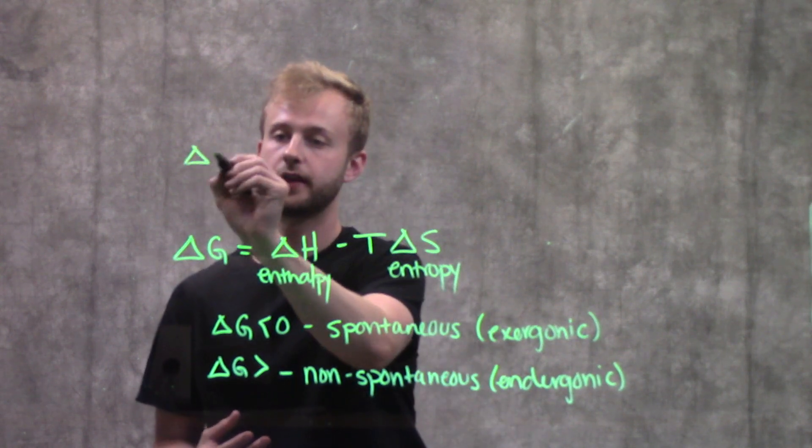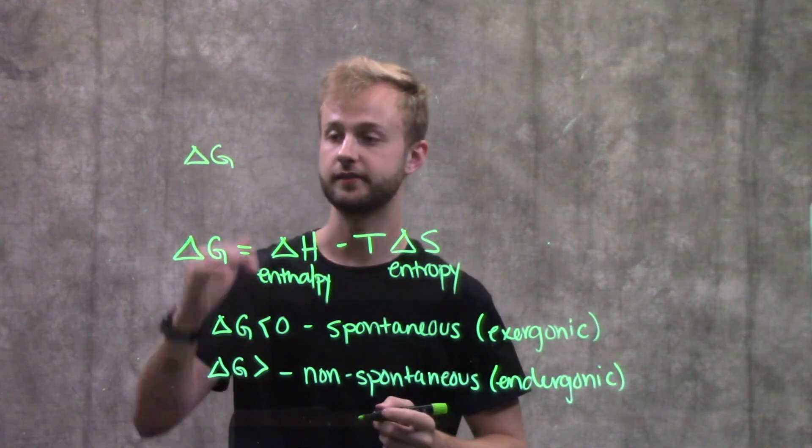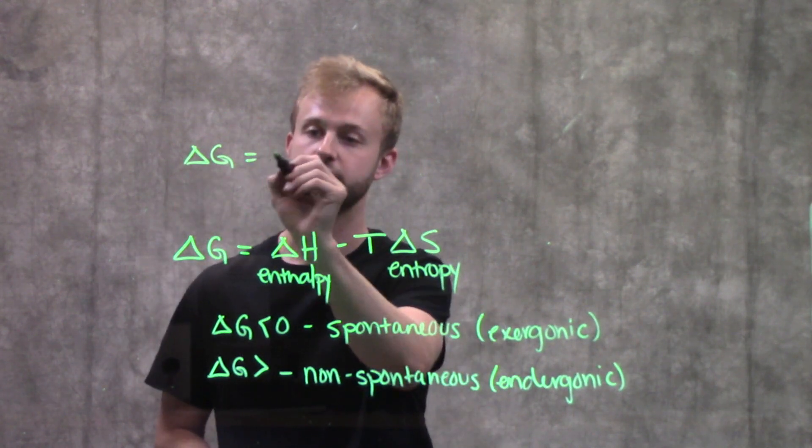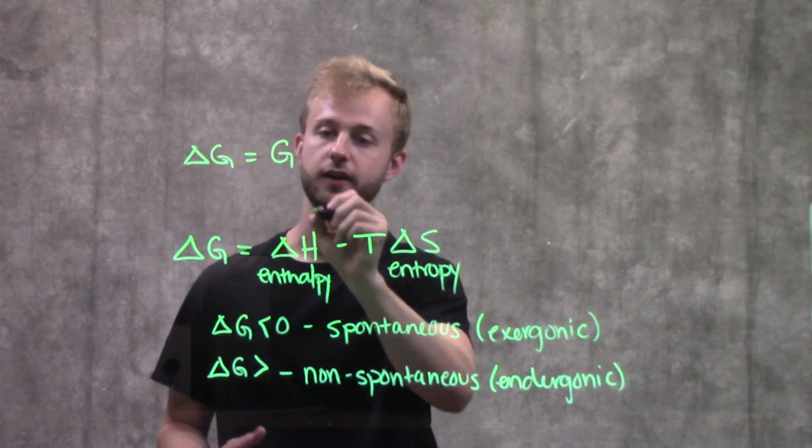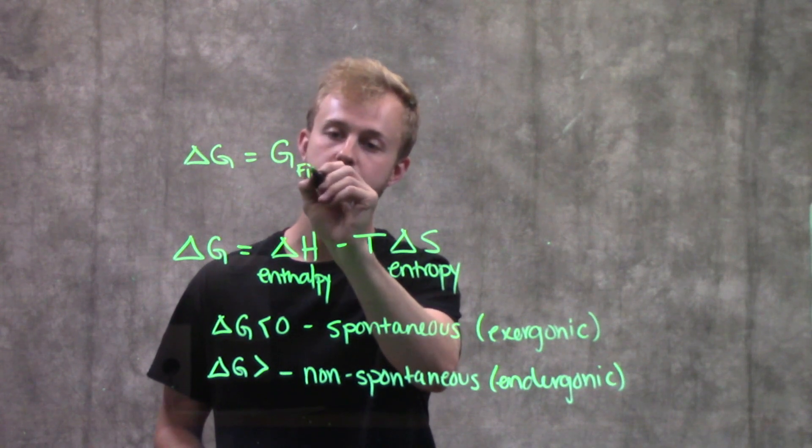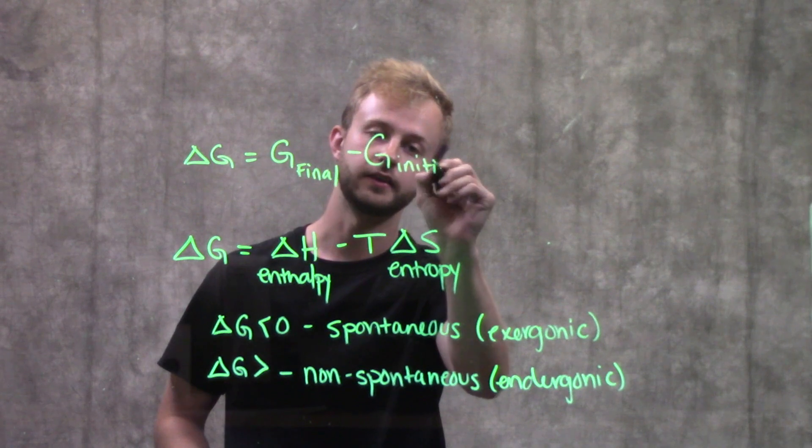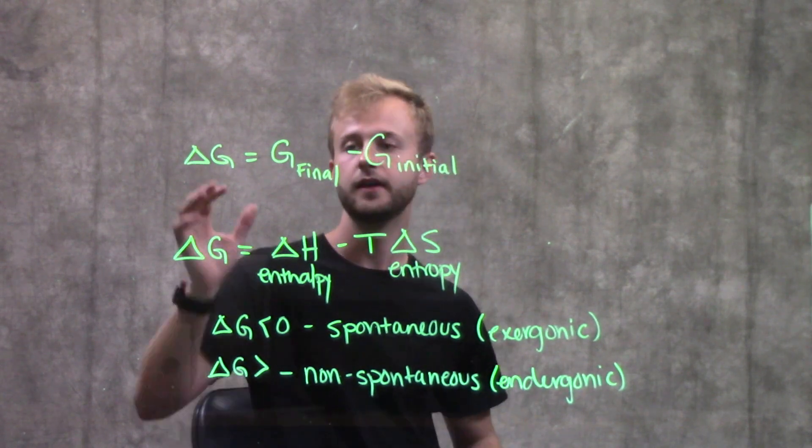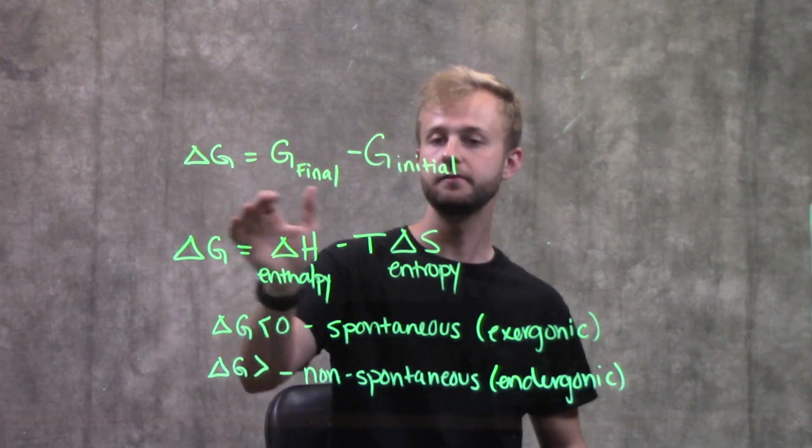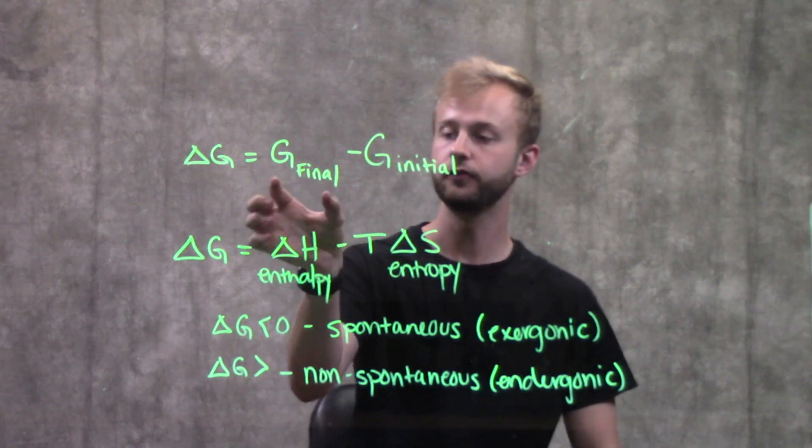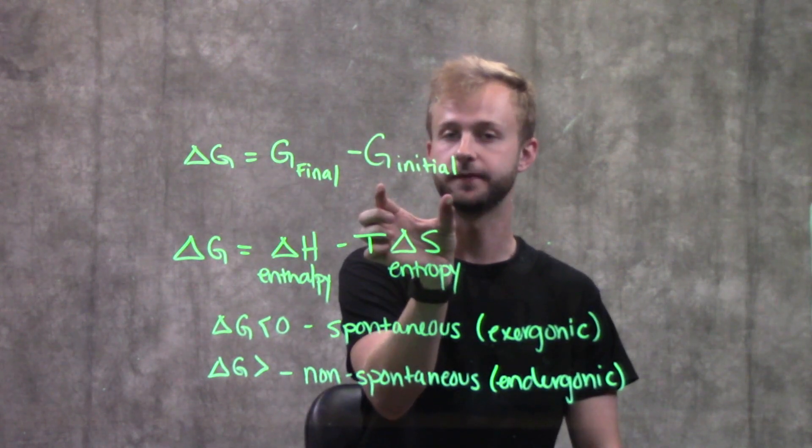So now let's look a little closer at some spontaneous reactions. So delta G can also be defined as, since it is a change in free energy, as our free energy at the end minus our free energy at the beginning. And so for this to be negative, that means that our final free energy is lower than our initial free energy.